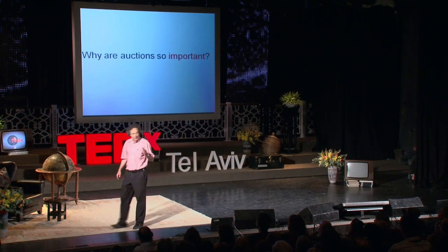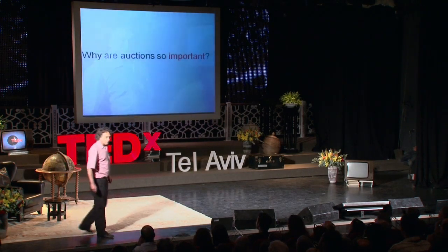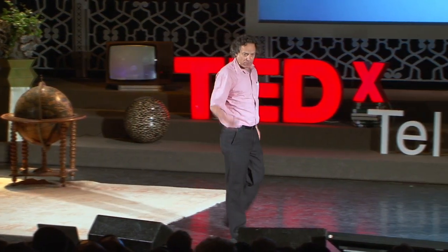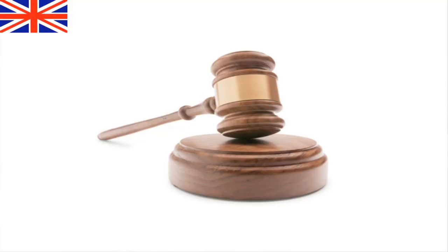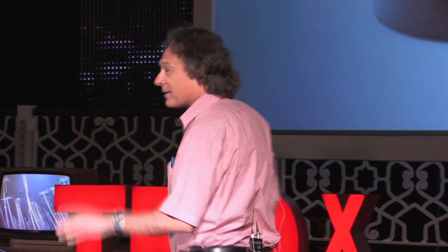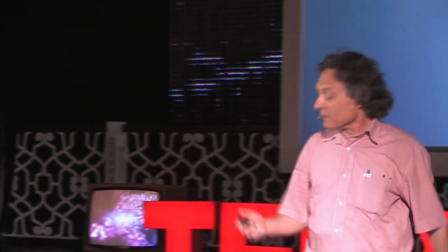The most striking examples are auctions where they transfer public assets into private assets. There are many types of auctions, and it's a very tricky business to analyze them — specifically, what is the optimal bidding in each one. I have very little time, so I'll go through only a few of them.